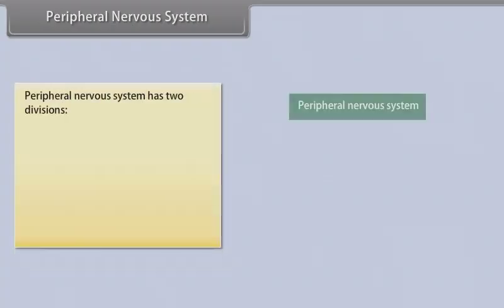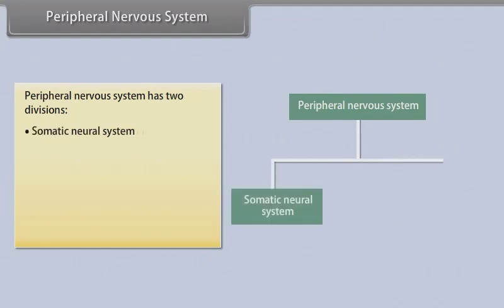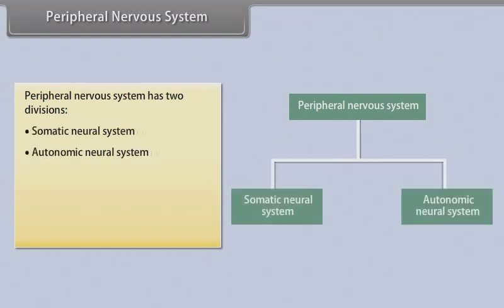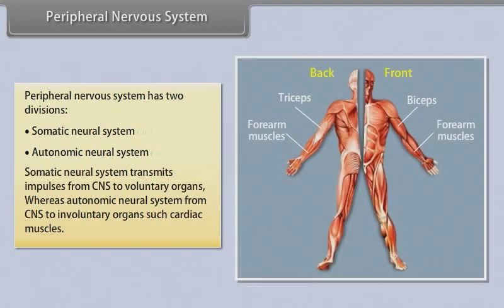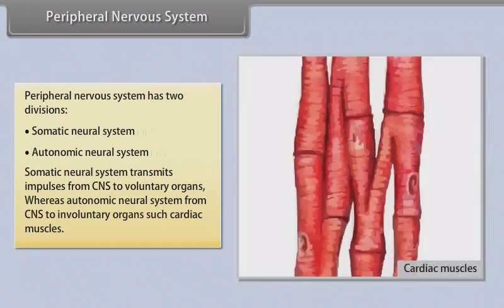The peripheral nervous system has two divisions: the somatic neural system and the autonomic neural system. The somatic neural system transmits impulses from the CNS to voluntary organs, whereas the autonomic neural system transmits impulses from the CNS to involuntary organs, such as cardiac muscles.